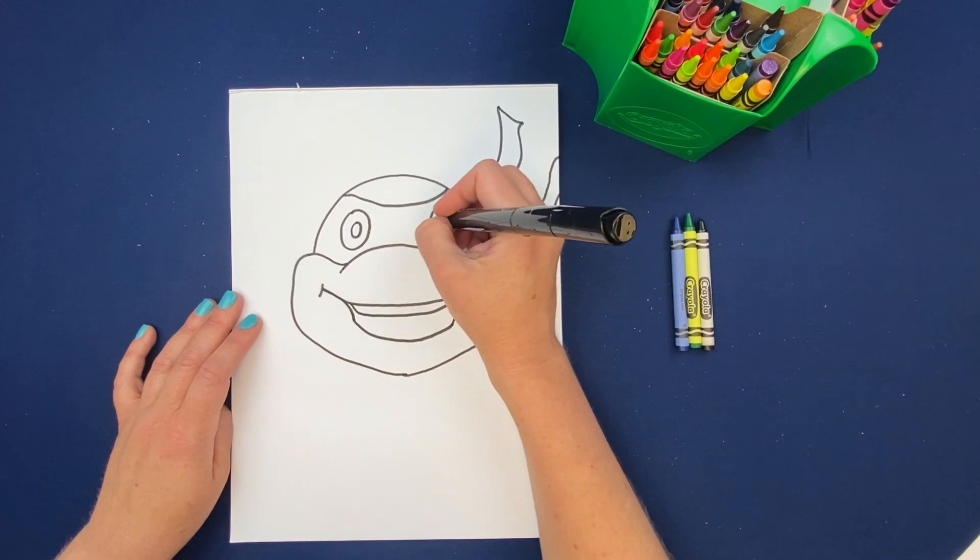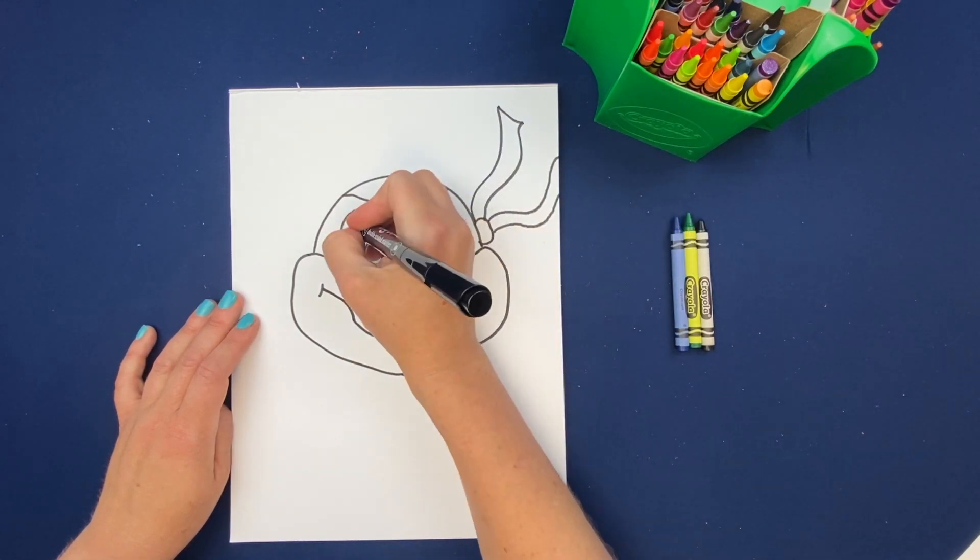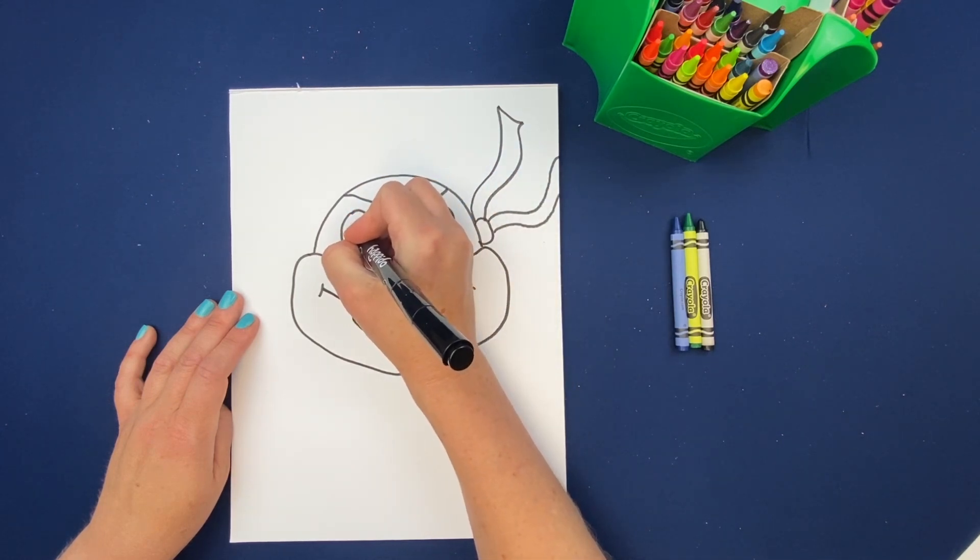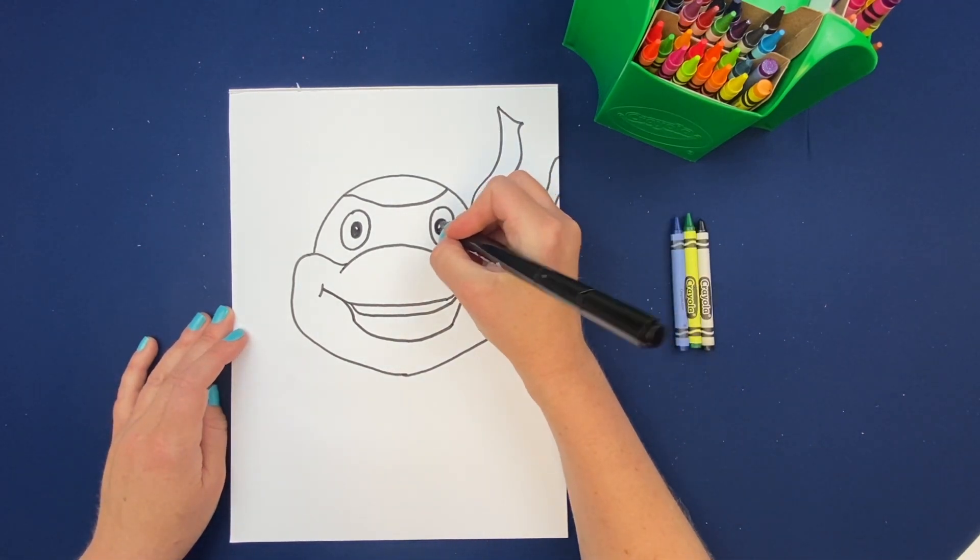All right, now we're gonna go in and finish out the pupils. I'm gonna leave a little bit of white as I'm coloring those in to make it look like there's a little bit of a reflection off his eyes. Just a little tiny bit.